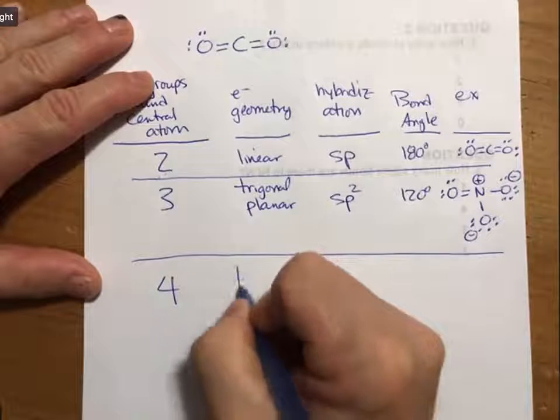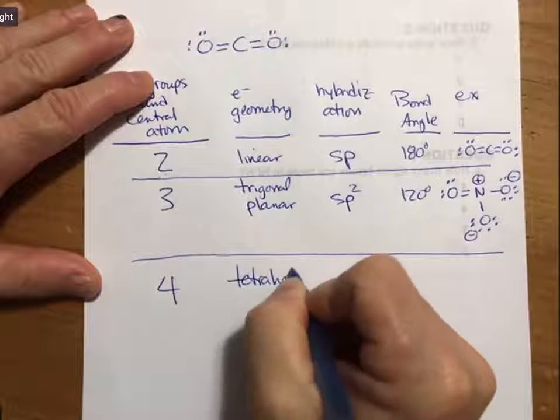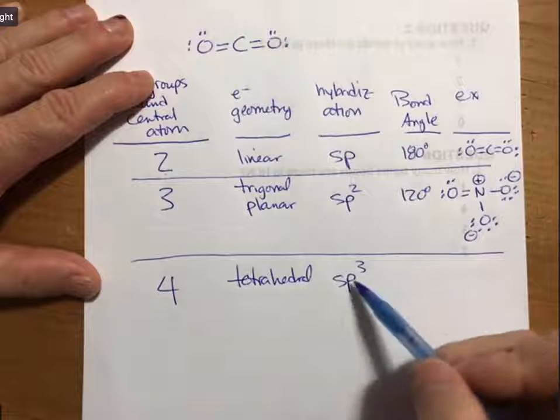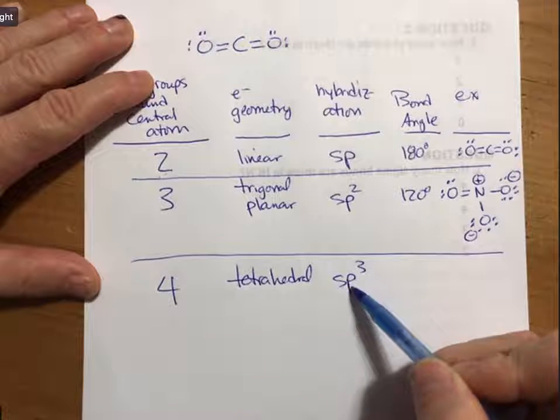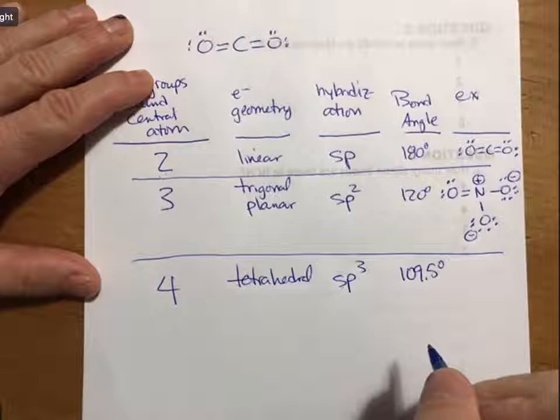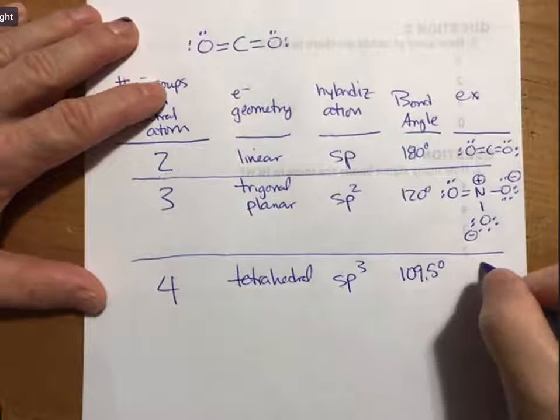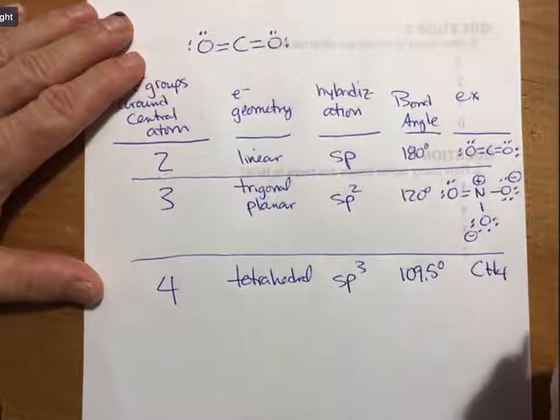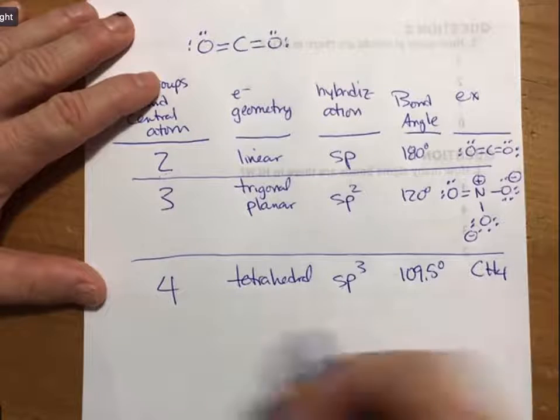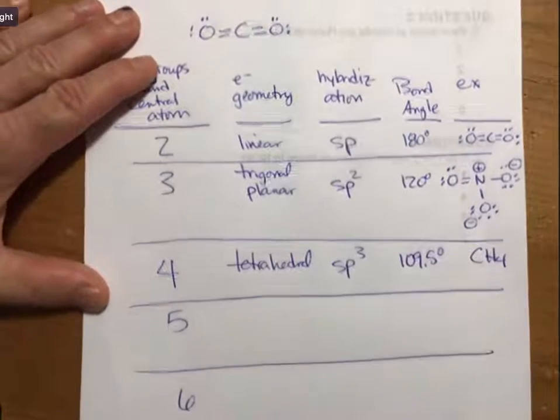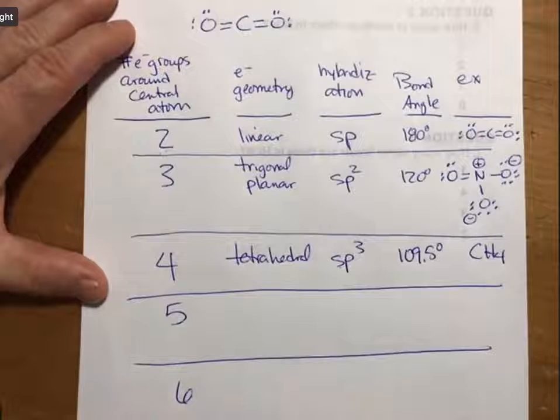Four is the tetrahedral shape with sp3 hybridization. That's four orbitals hybridized. The bond angle is 109.5 degrees, and CH4 is a great example of that.